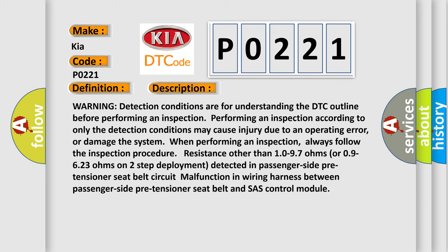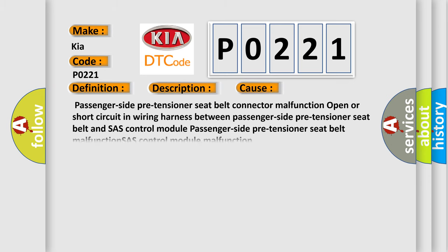This diagnostic error occurs most often in these cases: Passenger side pre-tensioner seat belt connector malfunction, open or short circuit in wiring harness between passenger side pre-tensioner seat belt and SAS control module.